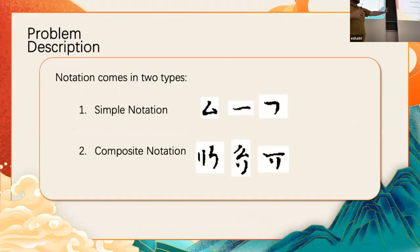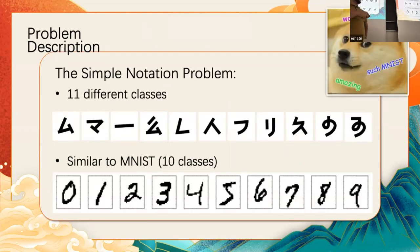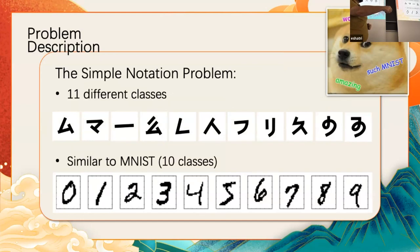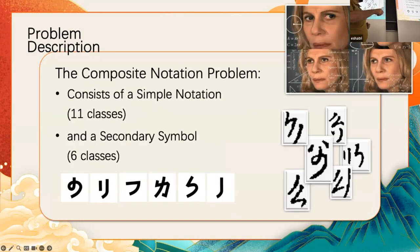Regarding OMR and the notation, we have two types: either simple or composite. Simple is easy — it's like MNIST with one extra class. But the problem is really the composite notation, because we have 11 classes of the simple notation plus additional secondary symbols, and some of them have look-alikes in the simple notation, which is difficult. You can also have top-bottom composition, diagonal composition, or left-right composition, which makes it a bit difficult.